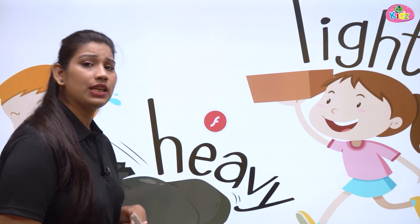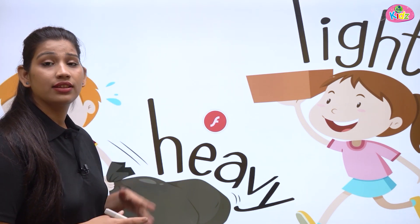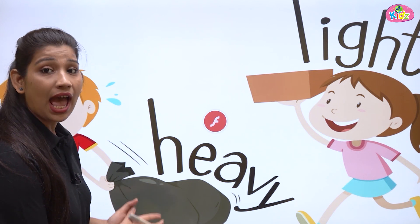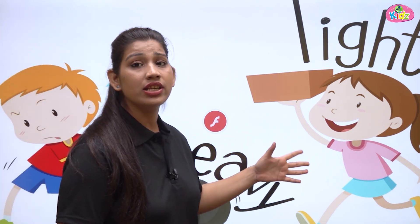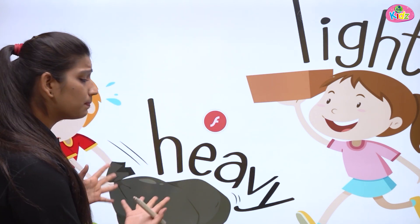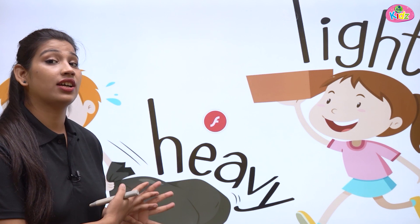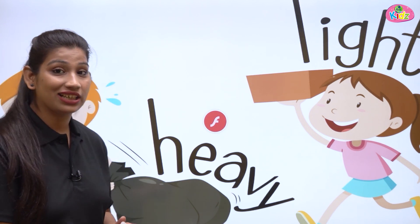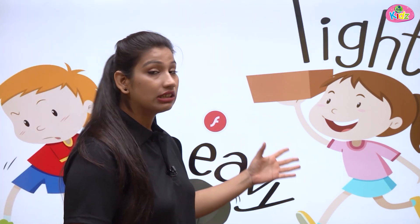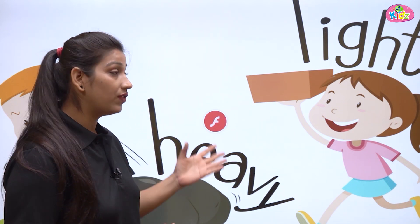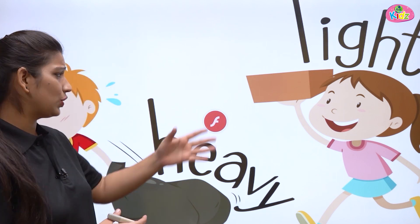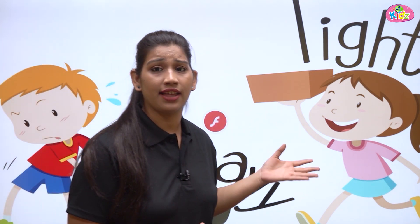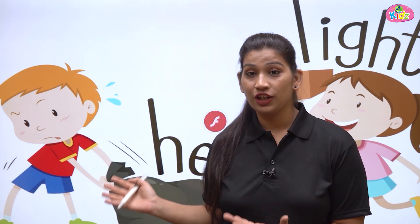Here you can see two children — one is a boy and the other is a girl. Both of them have some objects. The boy has a black bag and the girl has a wooden box. The boy's bag is looking heavy, bhaari lag raha hai. The girl's wooden box is looking light, halka lag raha hai. She is very happy and can easily carry it.